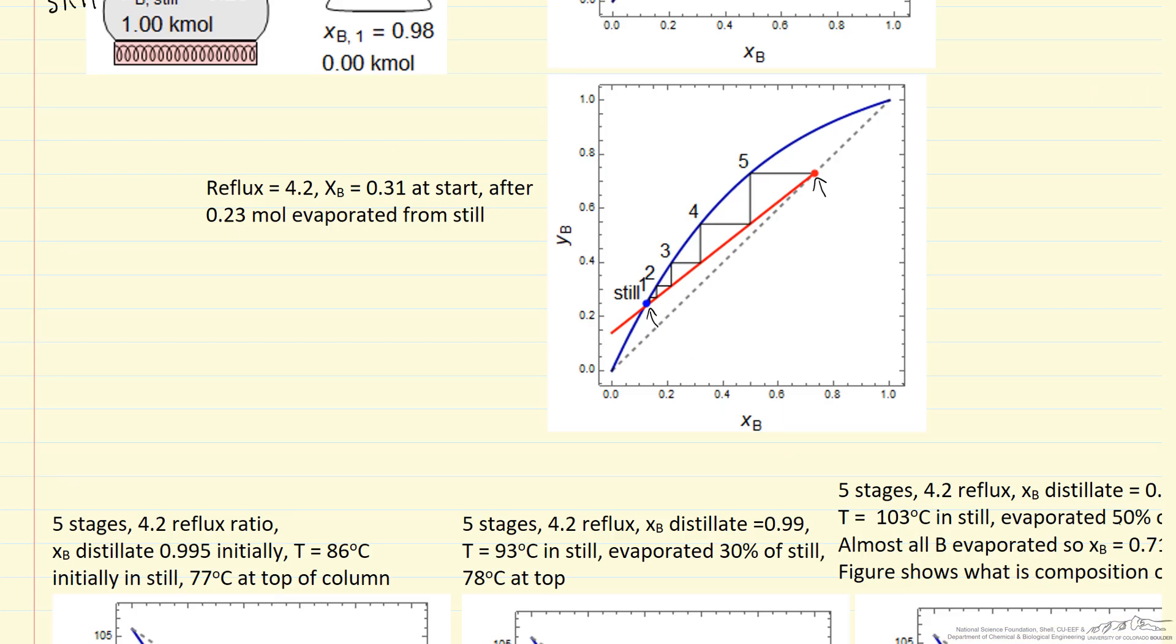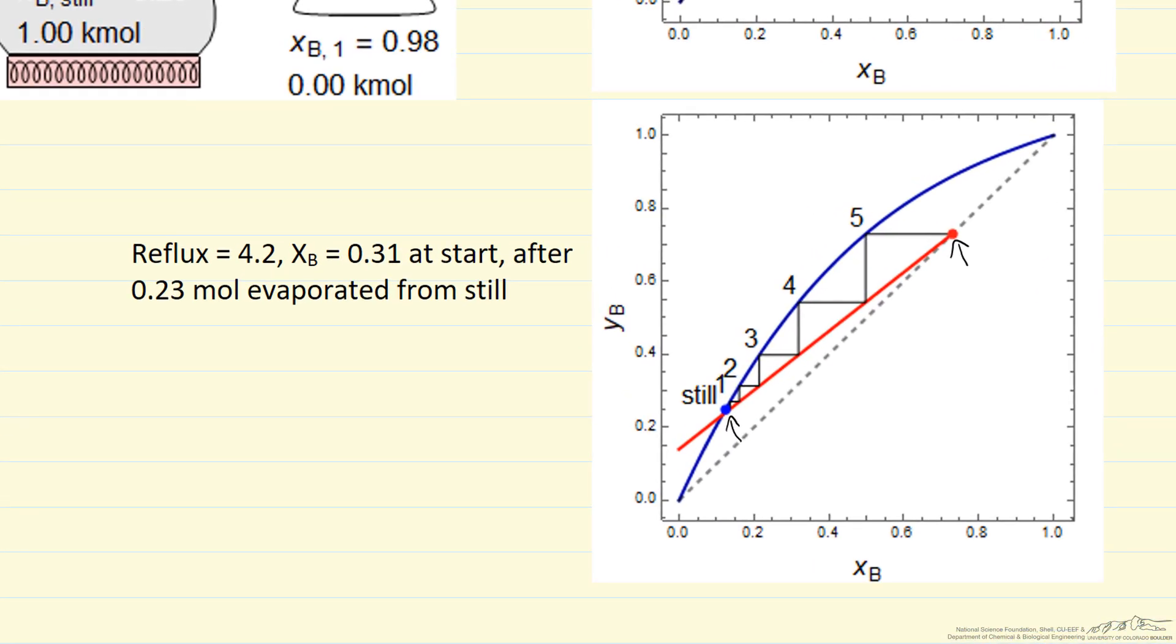Well, if we go back and let's look at this Y-X diagram again, the separation, the composition, the distillate is going to depend on how many stages. I've shown five stages, obviously more stages, we get better separation. Also depends on reflux ratio because it's related to the slope of this red line. If we increase the reflux ratio, we're going to get better separations.